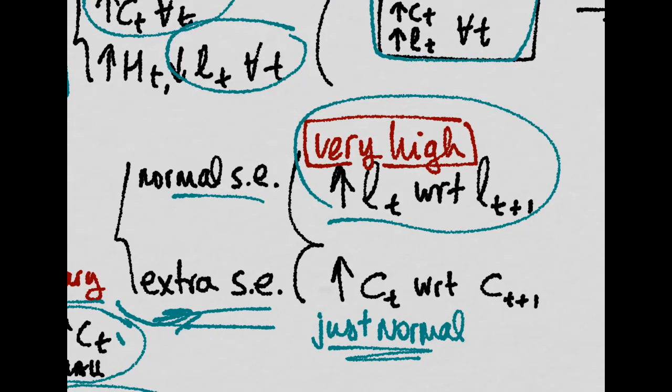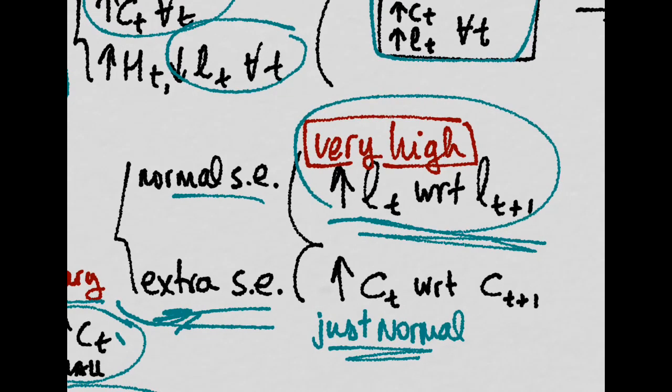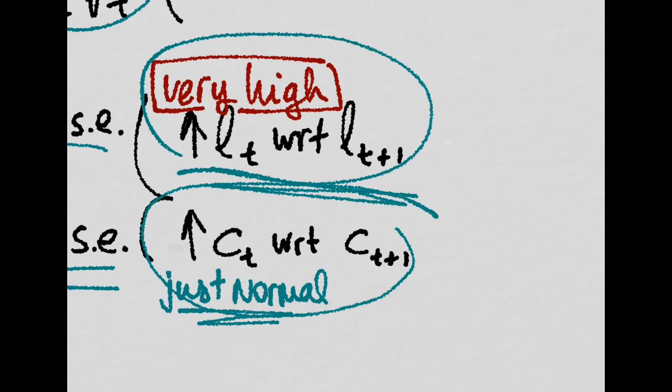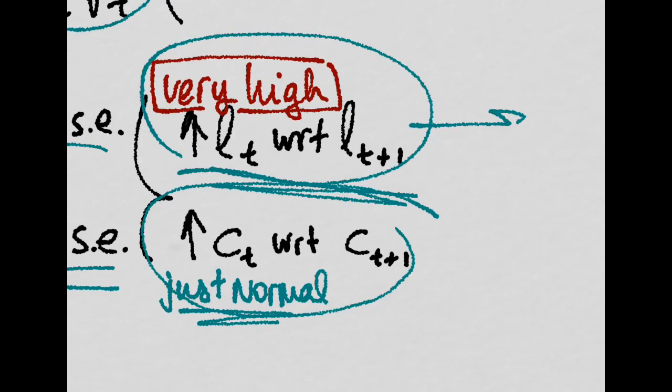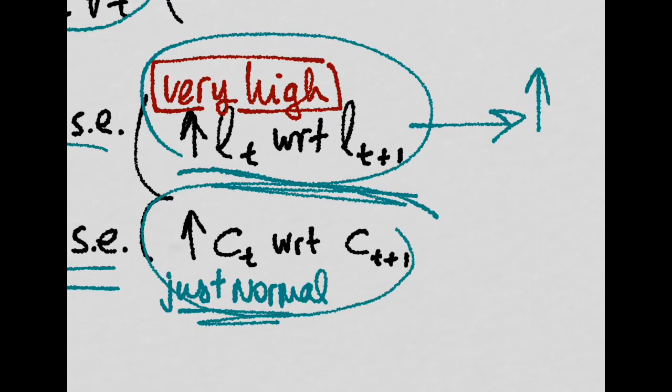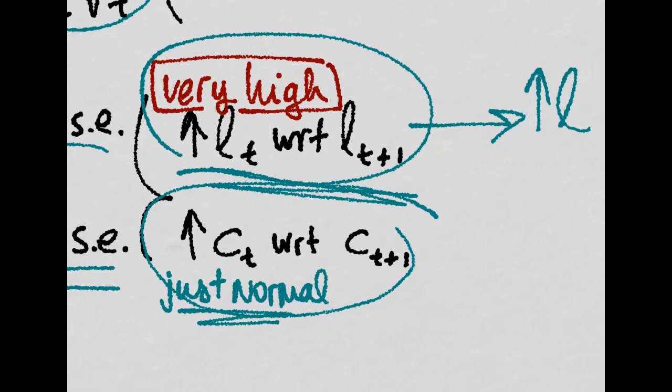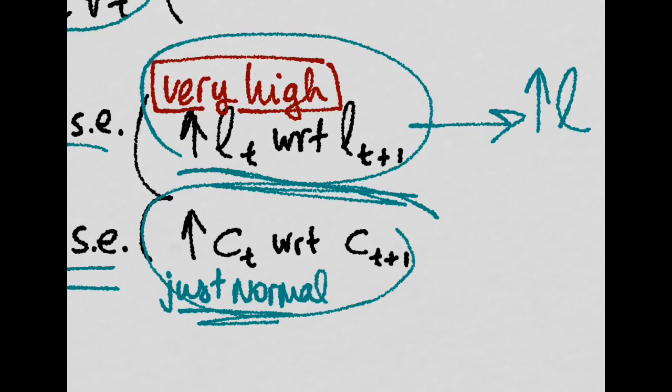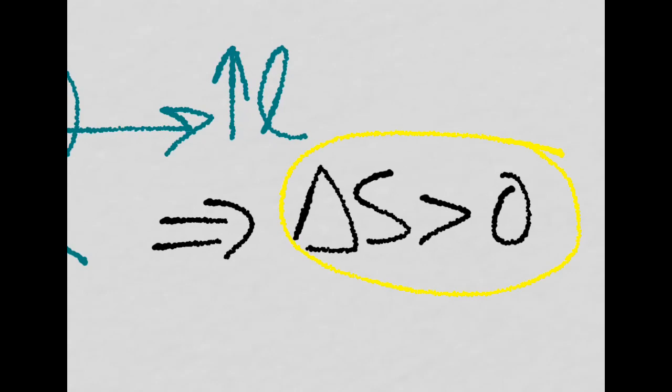So you will end up working much, much more at this present period and also increasing your consumption at this period. But basically, because the substitution effect prevails, you will increase your labor and that will mean that you will be saving more for the future. That is, when there is a temporary shock, you basically save it all.